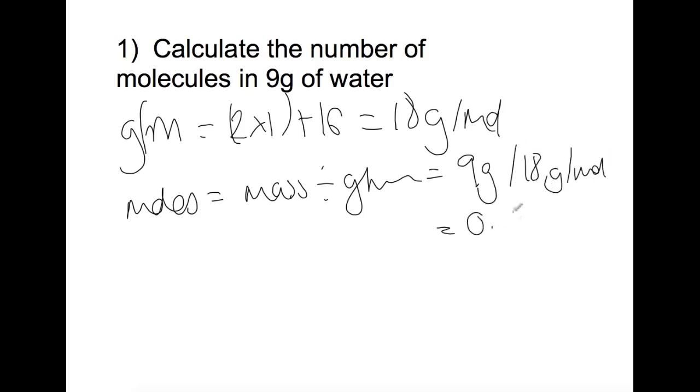In total we have 0.5 moles. So we have 0.5 moles, which means that for molecules, the number of molecules present, we have 0.5 times 6.02 times 10 to the 23 molecules.